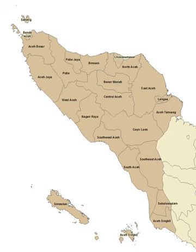Other new Regencies will include South Lombok created from East Lombok Regency on Lombok Island, the Regency of Adonara from East Flores Regency, and the municipality of Maumere from Sikka Regency on Flores Island, and the Regencies of Wasile from East Halmahera Regency and Obi Islands from South Halmahera Regency in North Maluku.